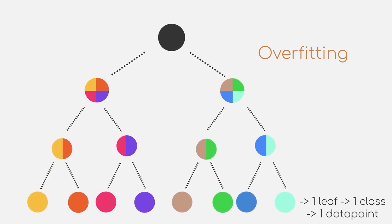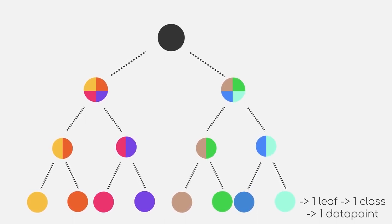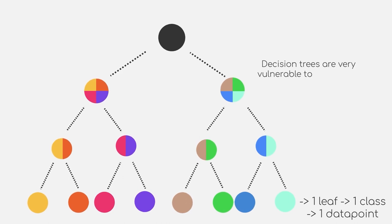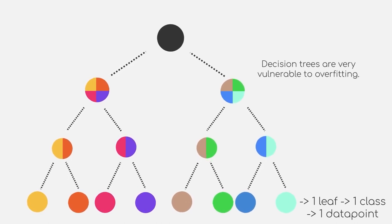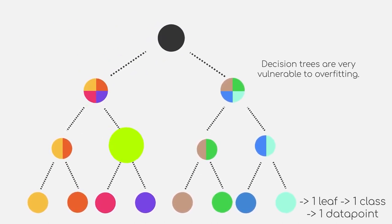Due to the design of a decision tree and the possibility of it splitting until we separated basically every single data point of our dataset, decision trees are very vulnerable to overfitting. As a consequence, this means that we are most likely rather bad at generalizing. New unseen data points have a high chance of getting misclassified.